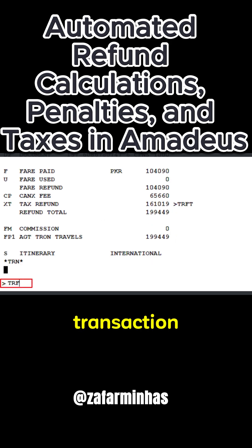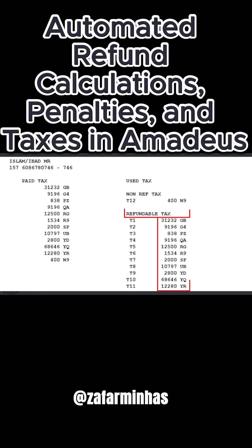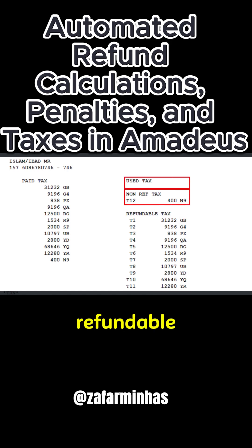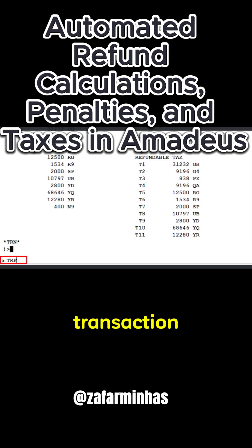Now use the TRFT transaction to display the breakdown of taxes. Press Enter. You will see paid taxes, refundable taxes, and non-refundable or used taxes. Tax number 12, labeled 9, is a non-refundable tax.